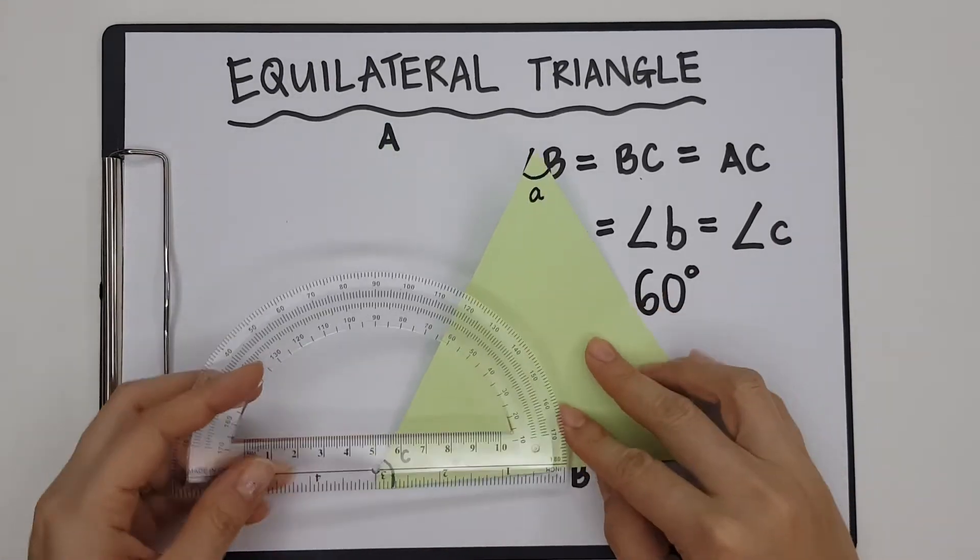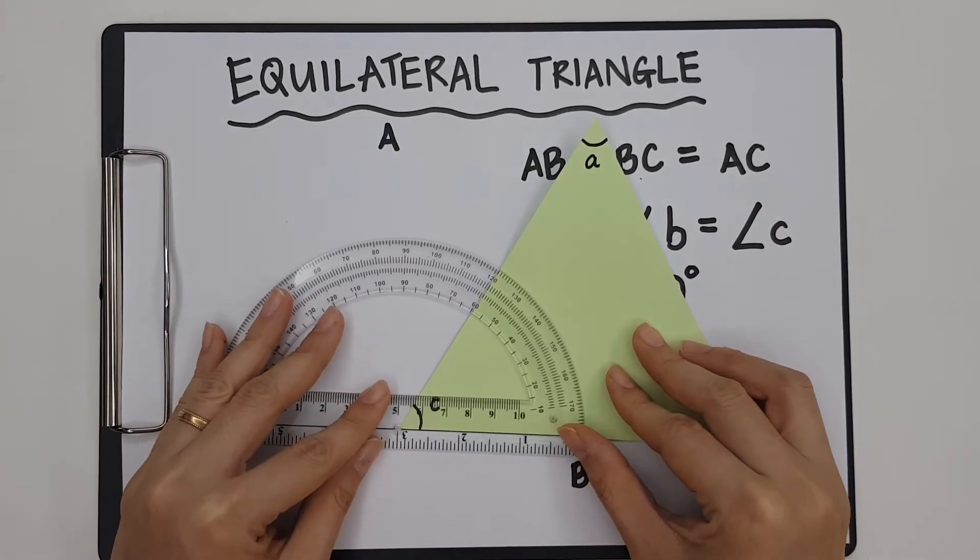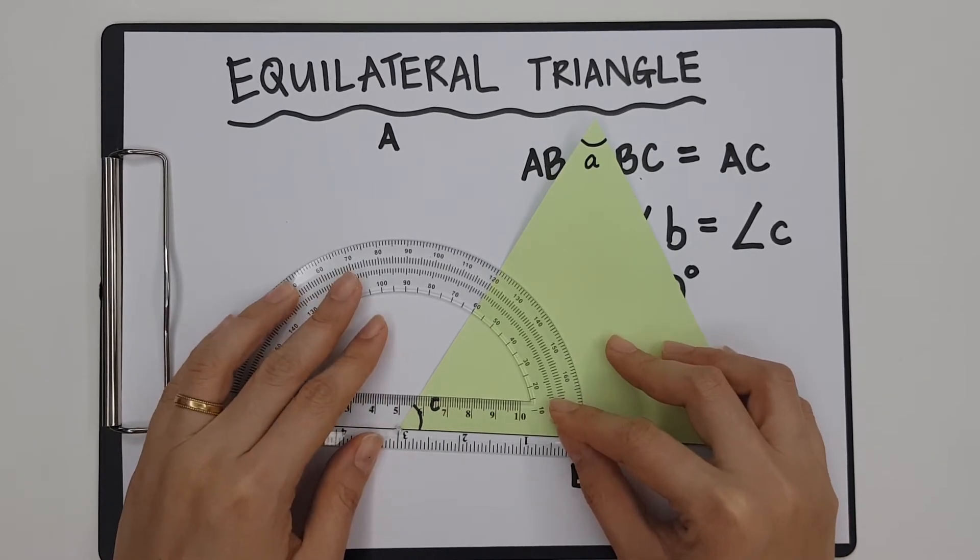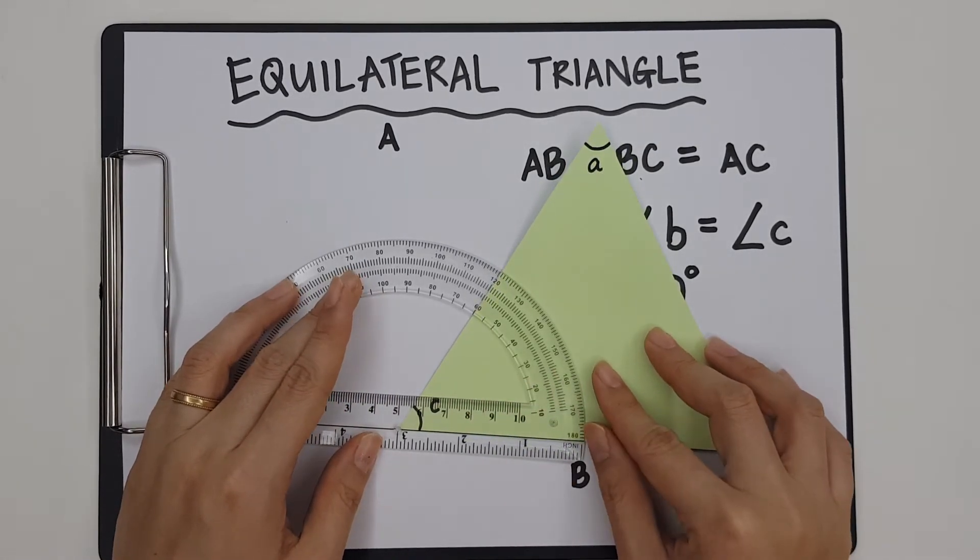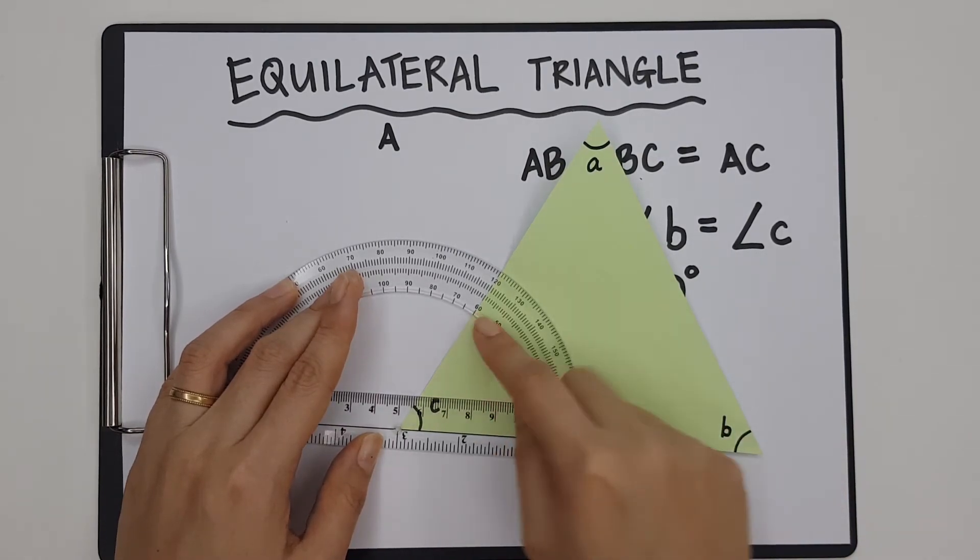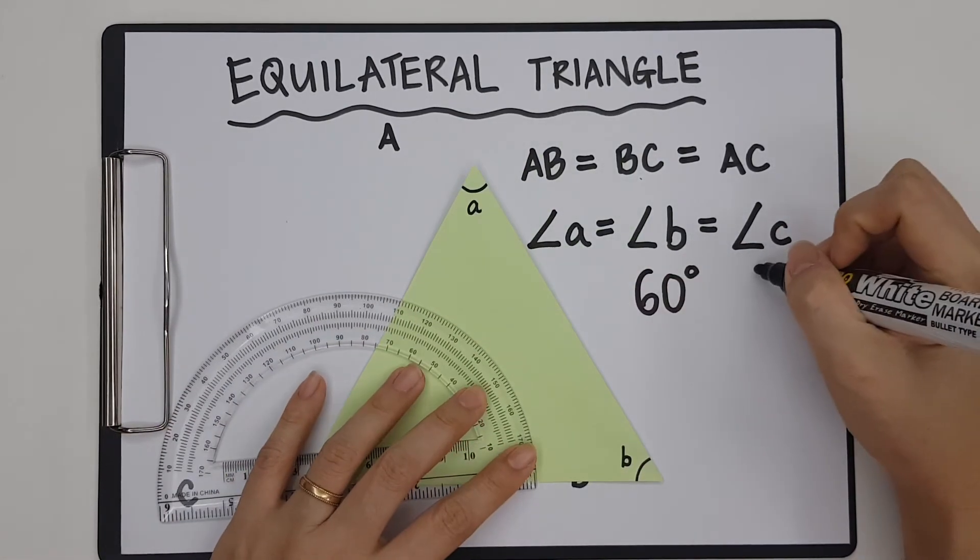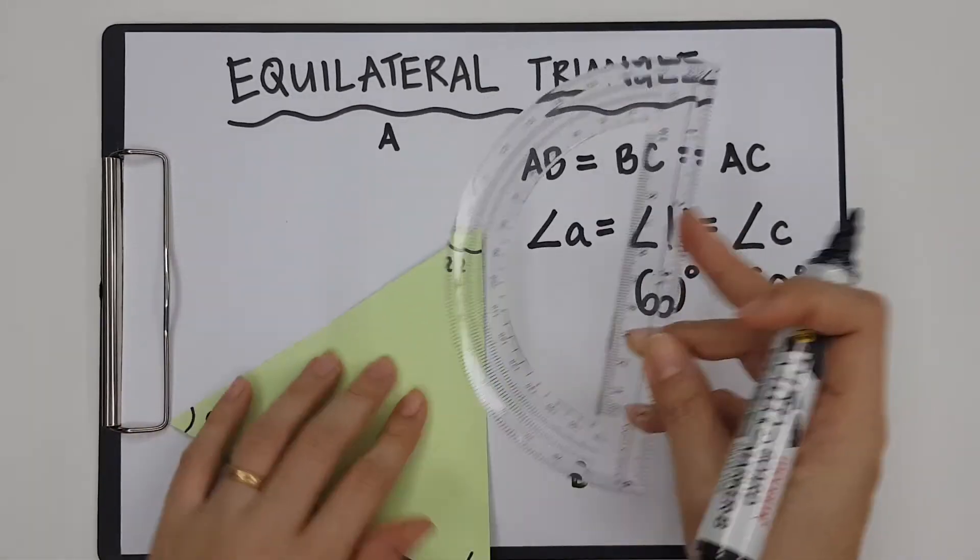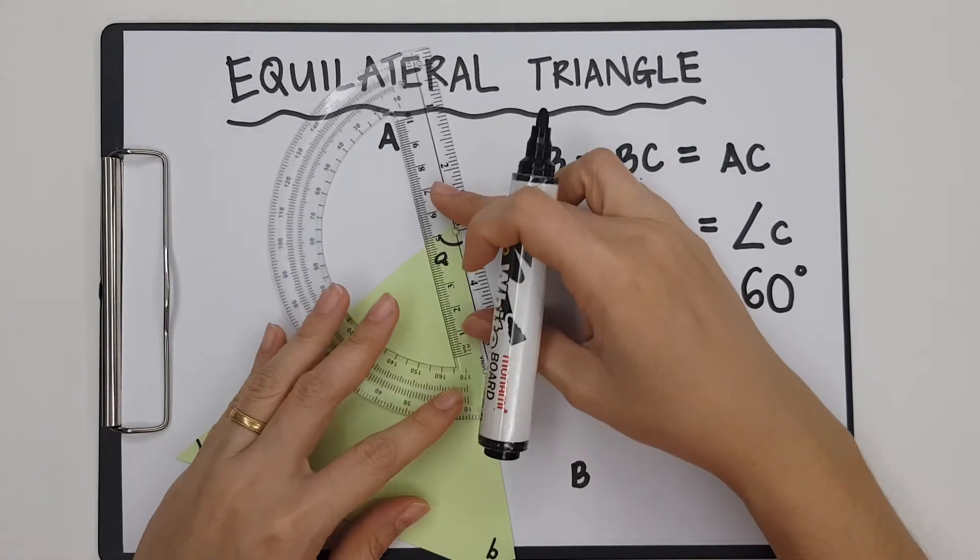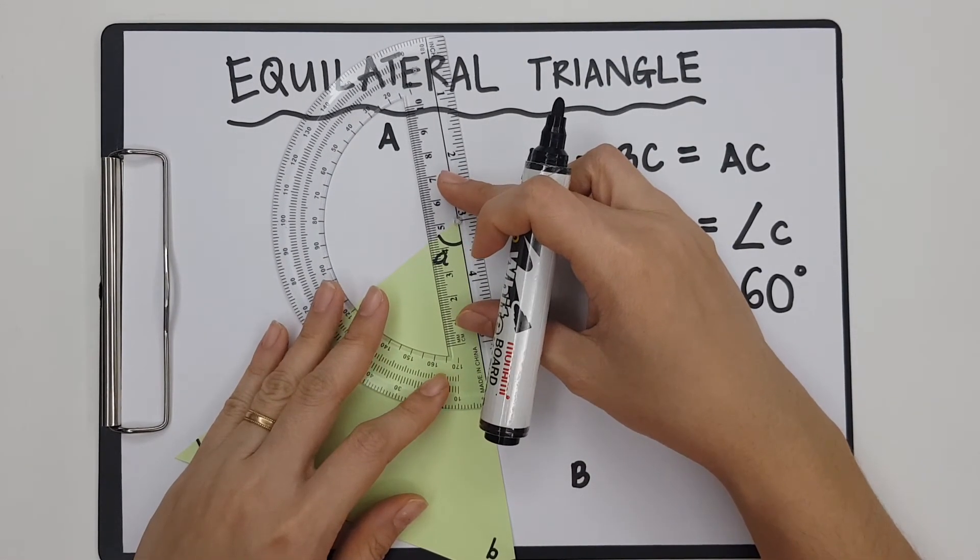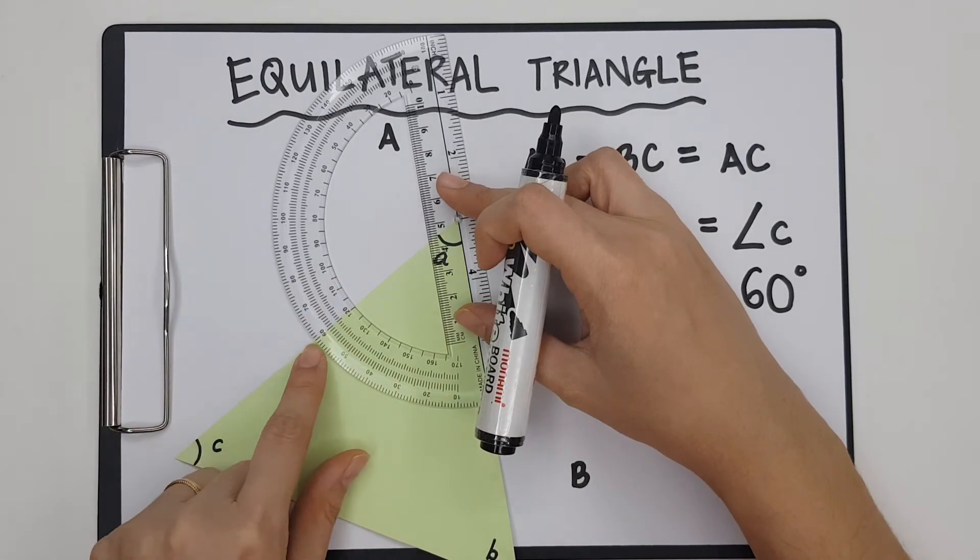Now let's measure angle C. Do the same thing. Baseline. And you will see that now we are using the inner scale. Because we're starting from here, zero. And it's also 60 degrees.